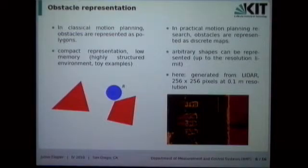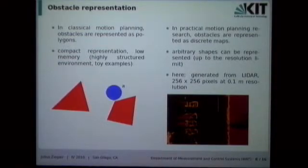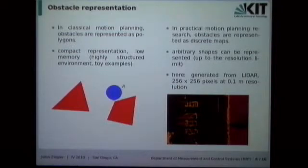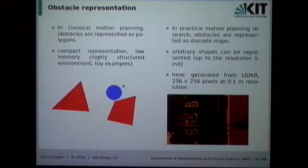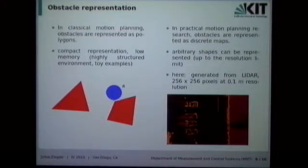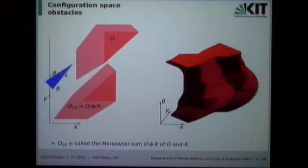Regarding obstacle representation: in classical motion planning literature, obstacles have been represented as polygons. This is purely pragmatic since memory was historically expensive, and polygons allow compact, memory-efficient representation. However, deriving a polygonal representation from sensor data is very difficult, so this is really only applicable to well-constructed toy examples or highly structured environments with map data available, such as underground parking facilities. In practical motion planning, nearly everyone uses discrete grid maps, which can represent arbitrary shapes and are easily derived from real sensor data. We currently use a grid of approximately 256 by 256 pixels at a resolution of 10 centimeters for parking maneuvers.